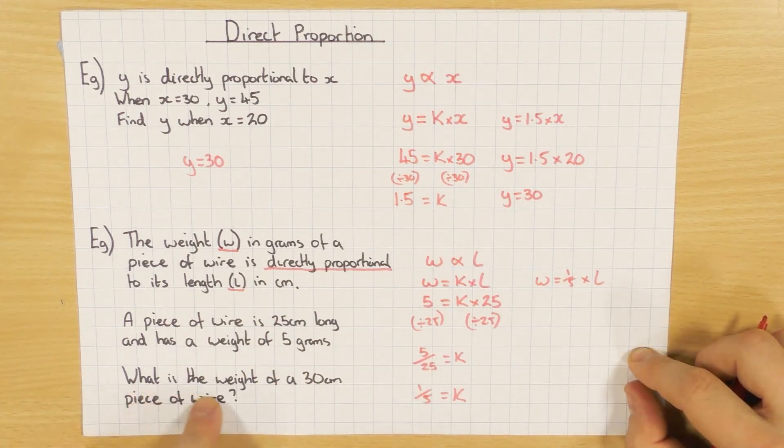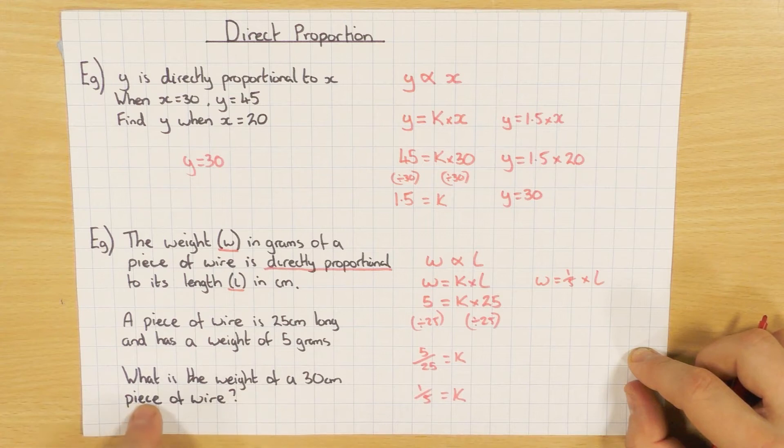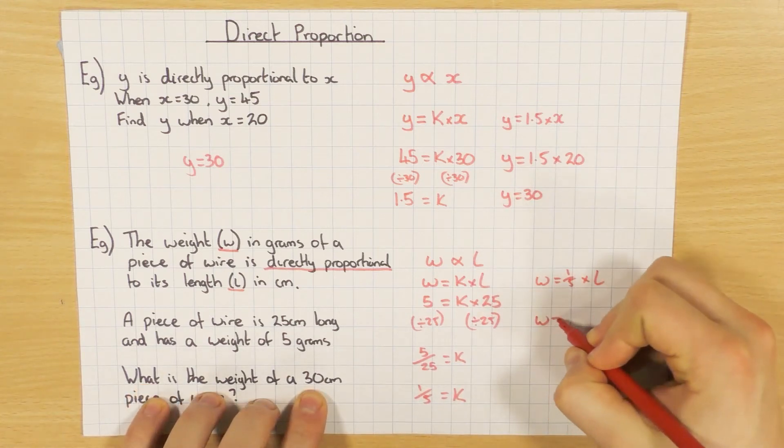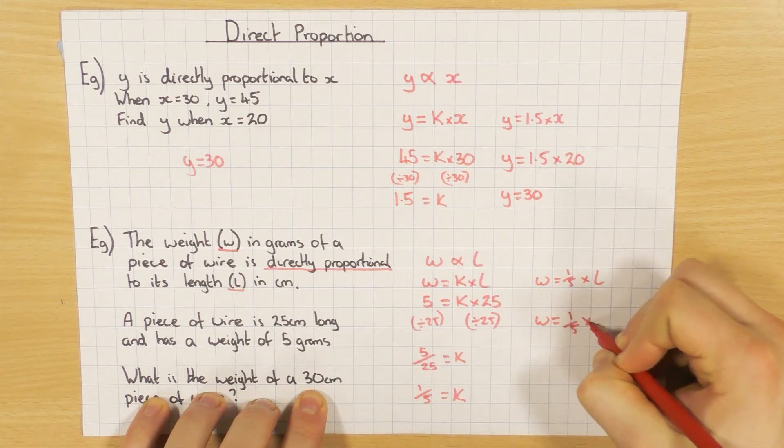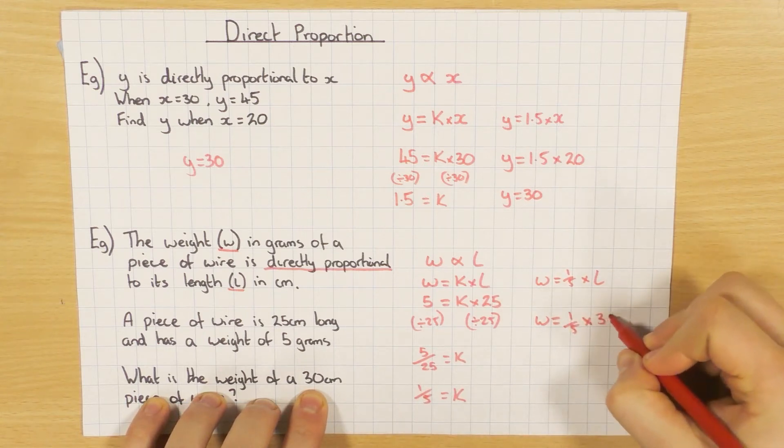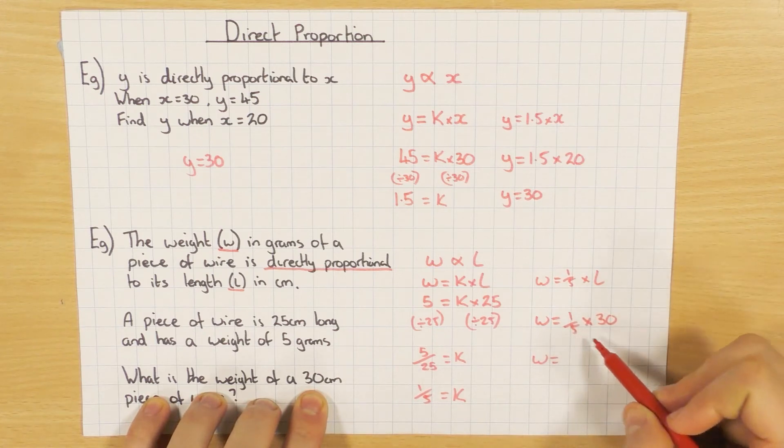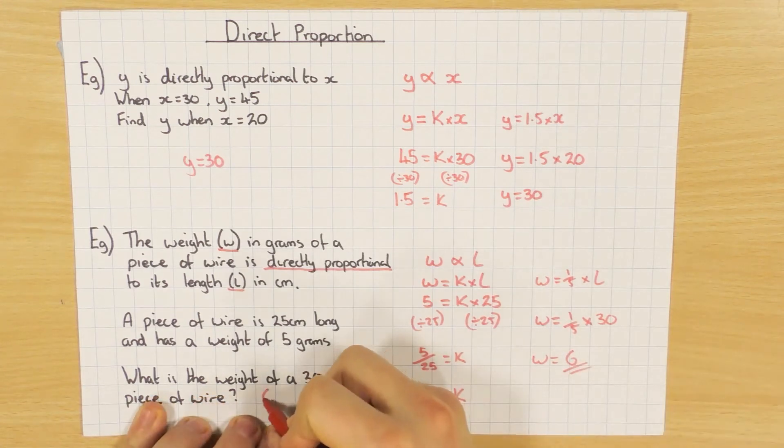And the question says, what is the weight of a 30 centimetre piece of wire? So the length is 30 centimetres. So w equals one-fifth times by 30. Or times it by one-fifth is just the same as dividing by 5. So we have the answer of 6.